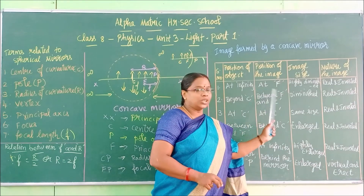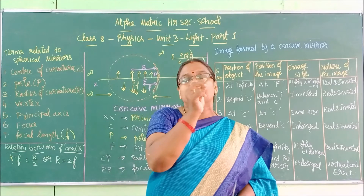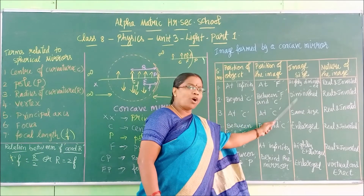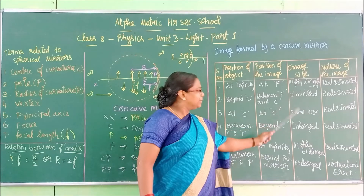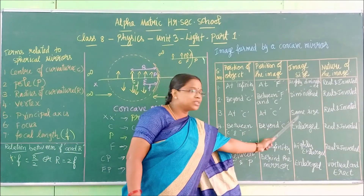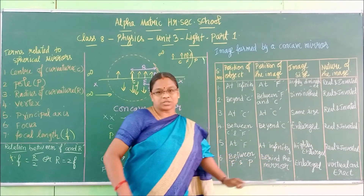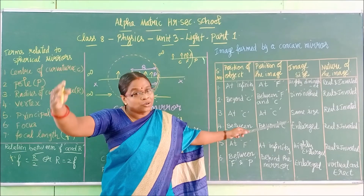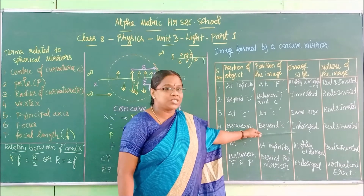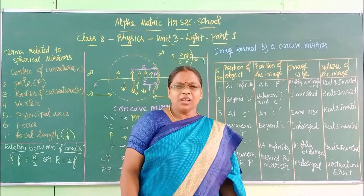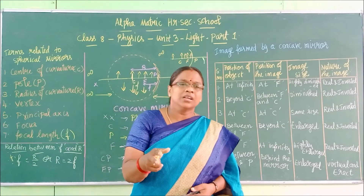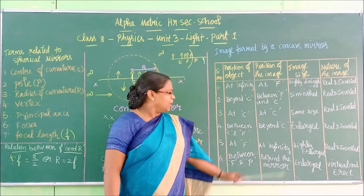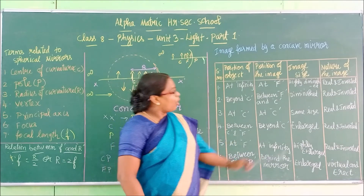When the object is at infinity, the image will be very very small — highly diminished. When the object moves further and is beyond C — diminished. When the object is at C — same size as the object. Then, as it moves closer, the image becomes enlarged. Then highly enlarged. So: highly diminished, diminished, same size, enlarged, highly enlarged — and at the last position between F and P the image becomes virtual.